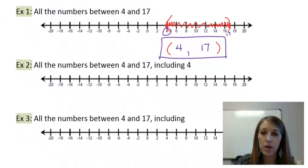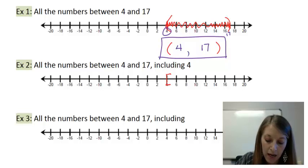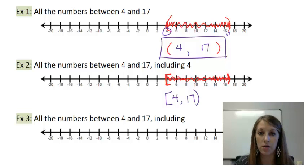Example 2, we know that it's very similar. We are including 4, so we have a bracket at 4. We are not including 17, so we have a parenthesis at 17, and we are including all the numbers in between. So my interval notation is bracket with 4 on the left, comma, 17, with parentheses on the right.